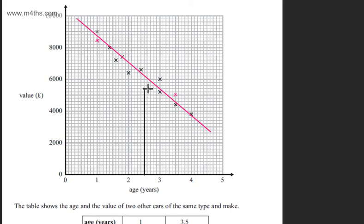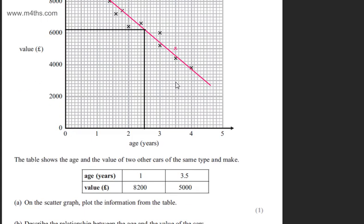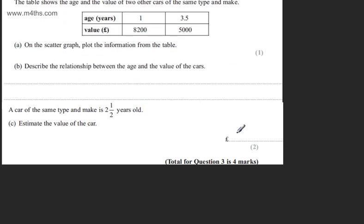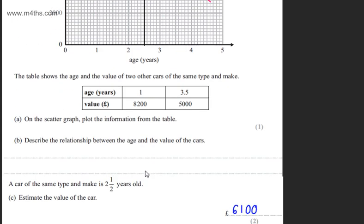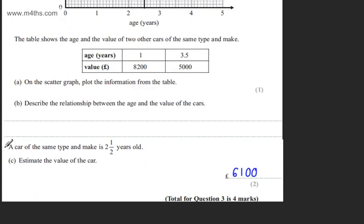Then I'll read across. Reading across, that looks to be about 6,100. Let's write that in—the answer is 6,100. You'll be given lots of room on this because it depends on how you've drawn your line of best fit. Others will be slightly different, but as long as we're showing some method when estimating, we'll get the two marks.